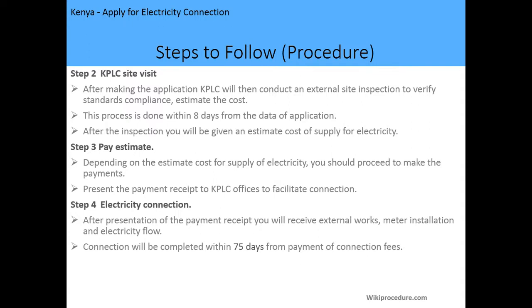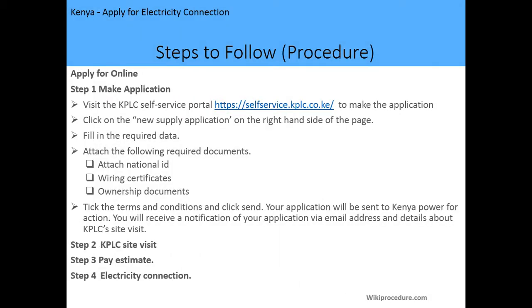After the inspection, you will be given an estimated cost for the supply of electricity, which will depend on the distance to the main grid. The third step is to pay the estimated cost and then present the payment receipt to the KPLC offices to facilitate the connection. You will then receive external wax meter installation and electricity flow, and the connection will be completed within 75 days from the payment of the connection fees.